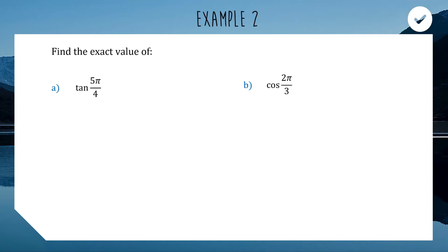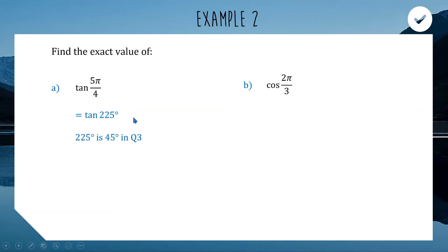Now for example 2 with tougher angles. First: tan(5π/4). Converting: π/4 is 45 degrees, times 5 gives 225 degrees. 225 is beyond 180, so we're in quadrant 3, which is 45 degrees past 180. In quadrant 3, tan is positive. So tan(225) = positive tan(45) = 1. The answer is 1.